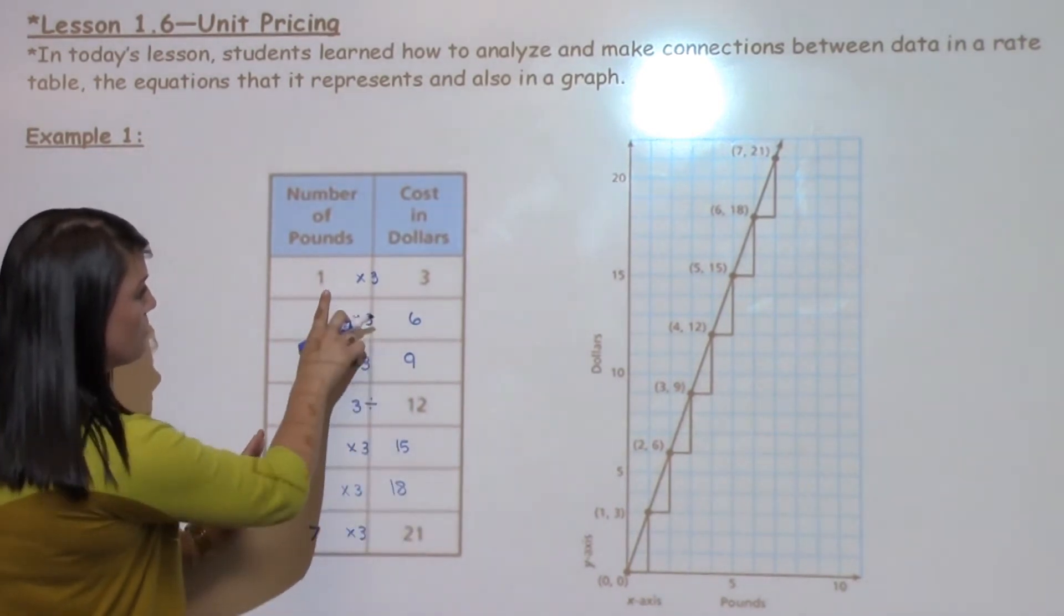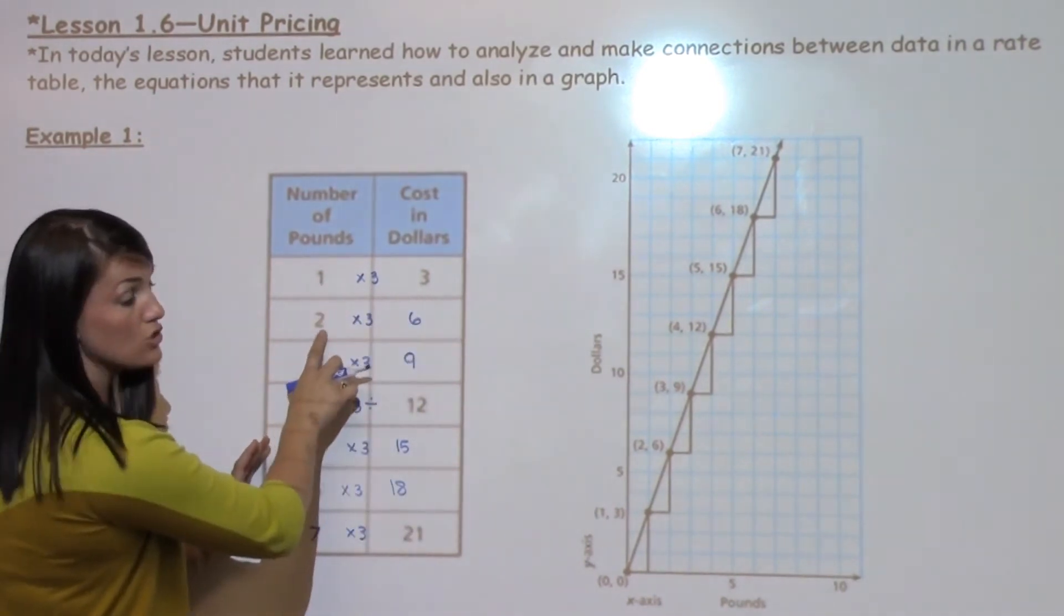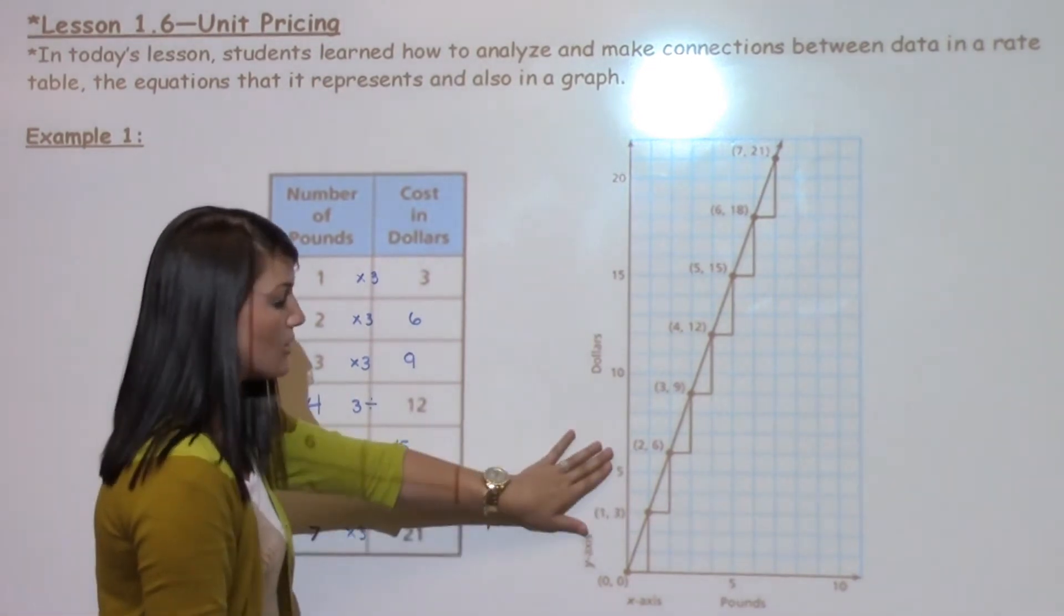we're going to take the same information, one pound $3, two pounds $6, and so on, and show it on a graph.